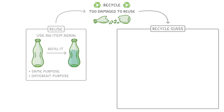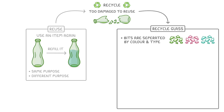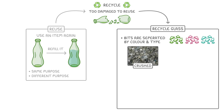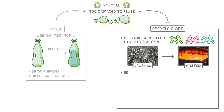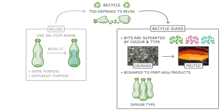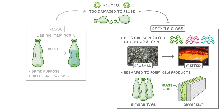In the case of glass, this usually means all the bits are separated by colour and type, and are then crushed and melted, so that they can be reshaped to form new products. And these new products could be of a similar type, like more bottles and jars, or they could be completely different, such as insulating glass wool, which is used for wall insulation in houses.